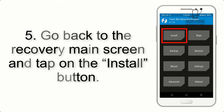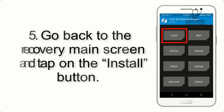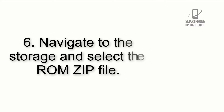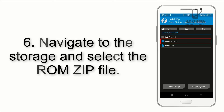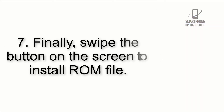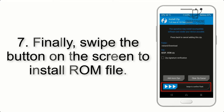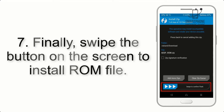Step 5: Go back to the recovery main screen and tap on the Install button. Step 6: Navigate to the storage and select the ROM zip file. Step 7: Finally, swipe the button on the screen to install the ROM file.